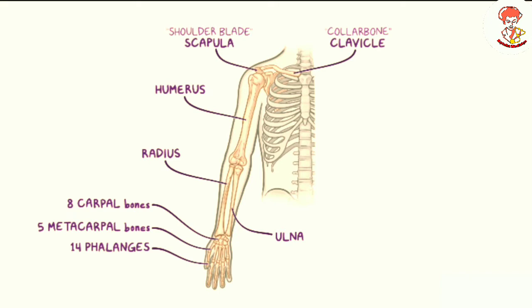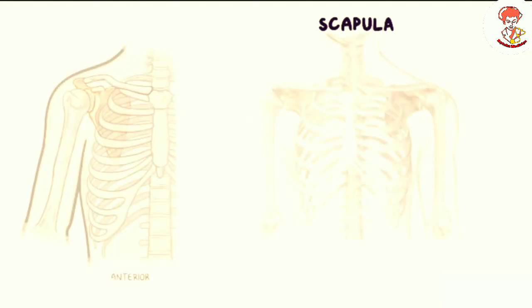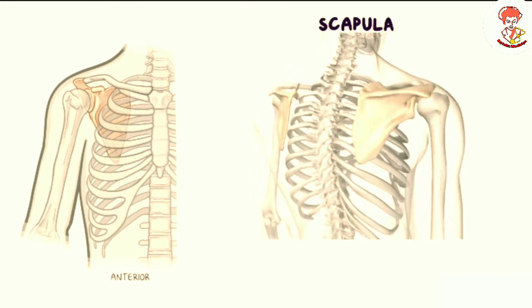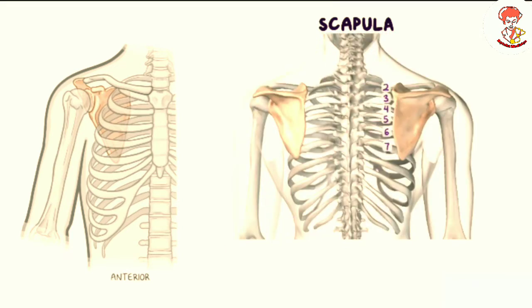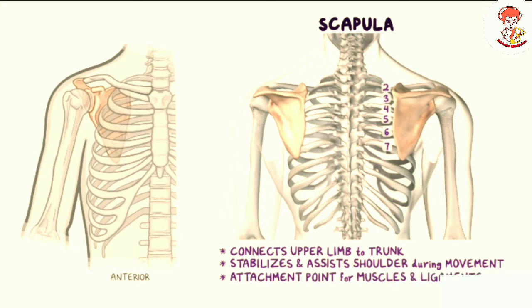Now we will talk about the shoulder girdle. The shoulder girdle consists of the scapula and clavicle and articulates anteriorly with the manubrium of the sternum. Starting with the scapula, it is a flat triangular bone located on the posterior aspect of the shoulder, extending over the second to the seventh ribs. The scapula helps to connect the rest of the upper limb to the trunk while stabilizing and assisting the shoulder during movement, and serves as an attachment point for numerous muscles and ligaments.